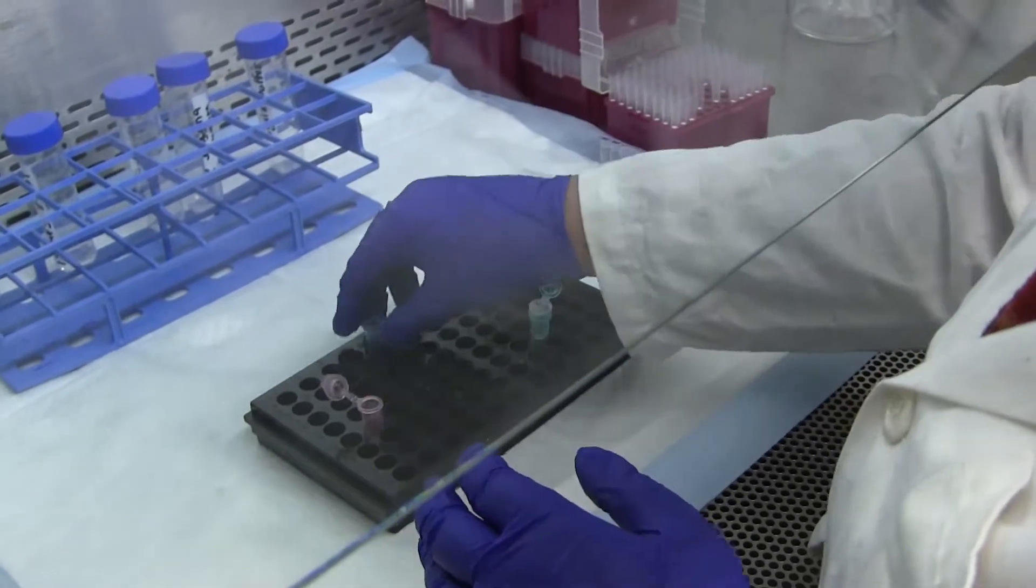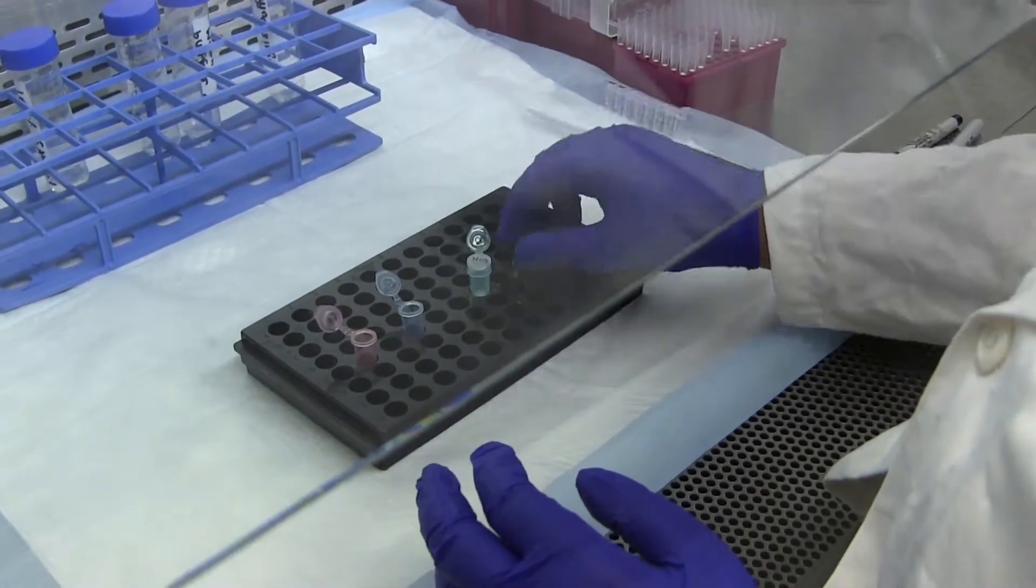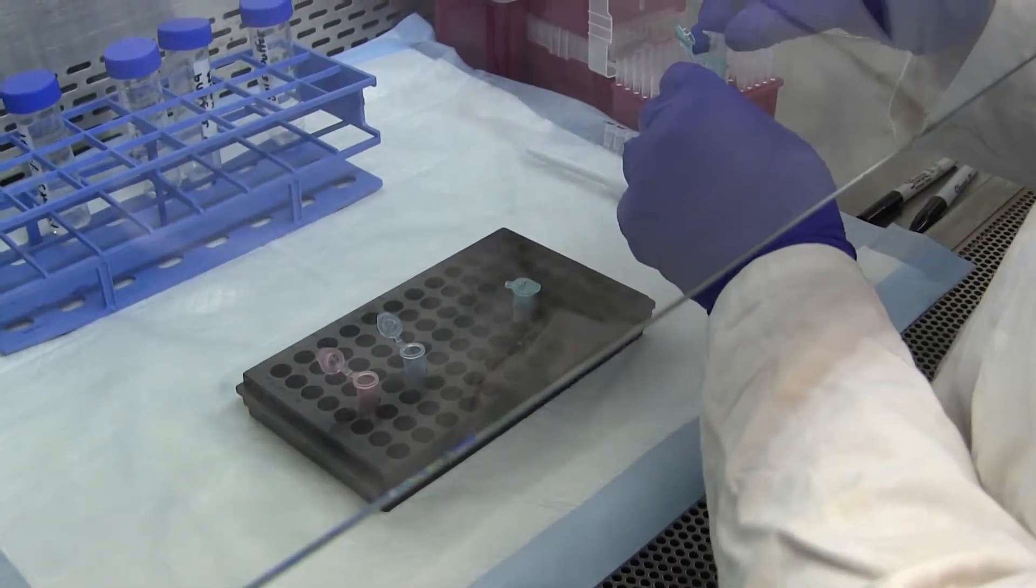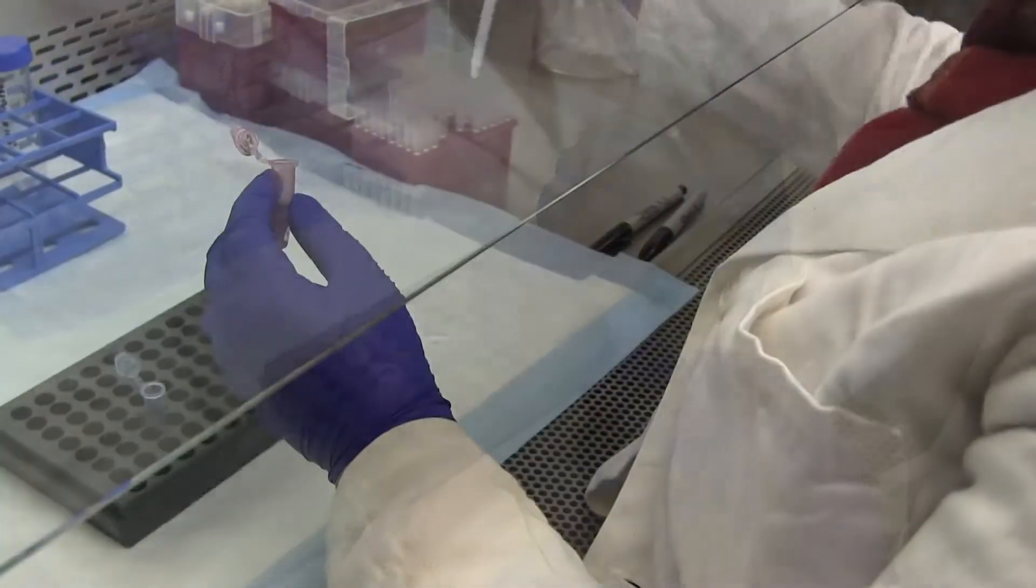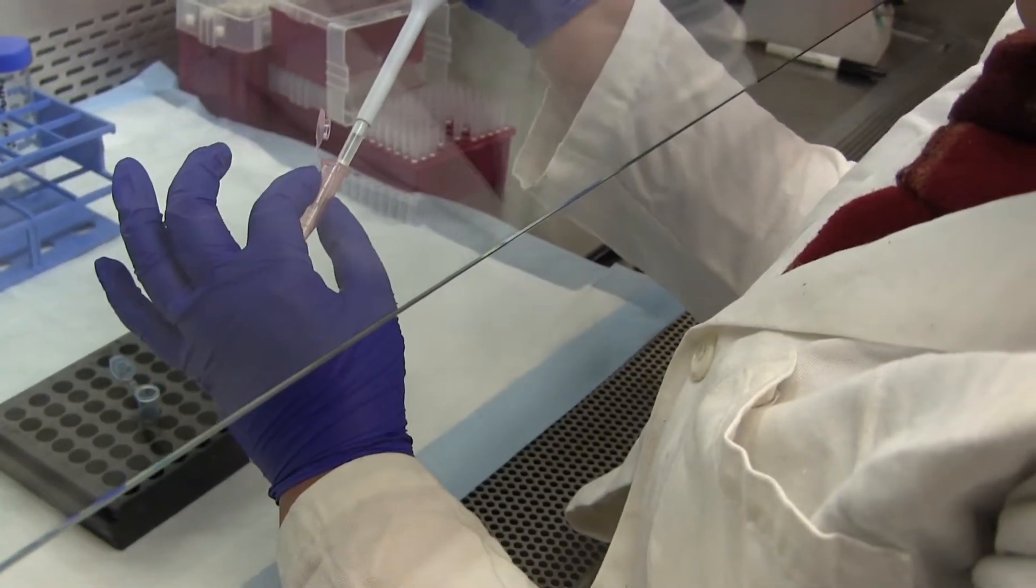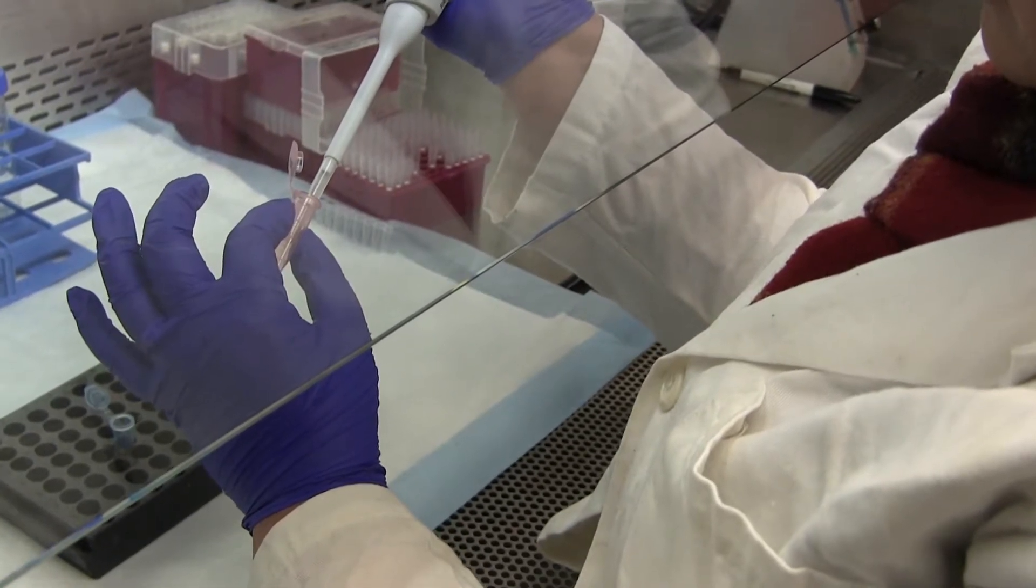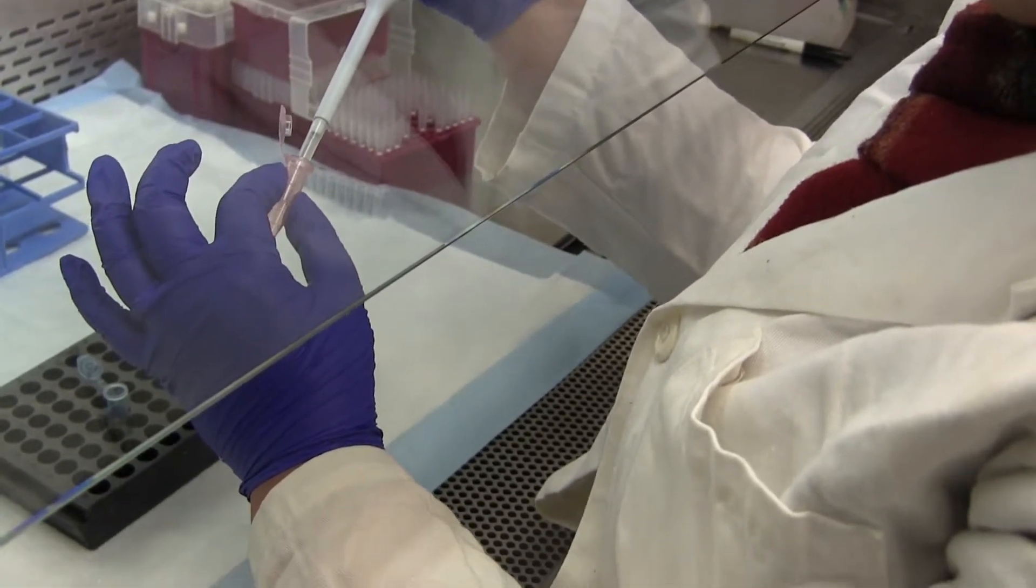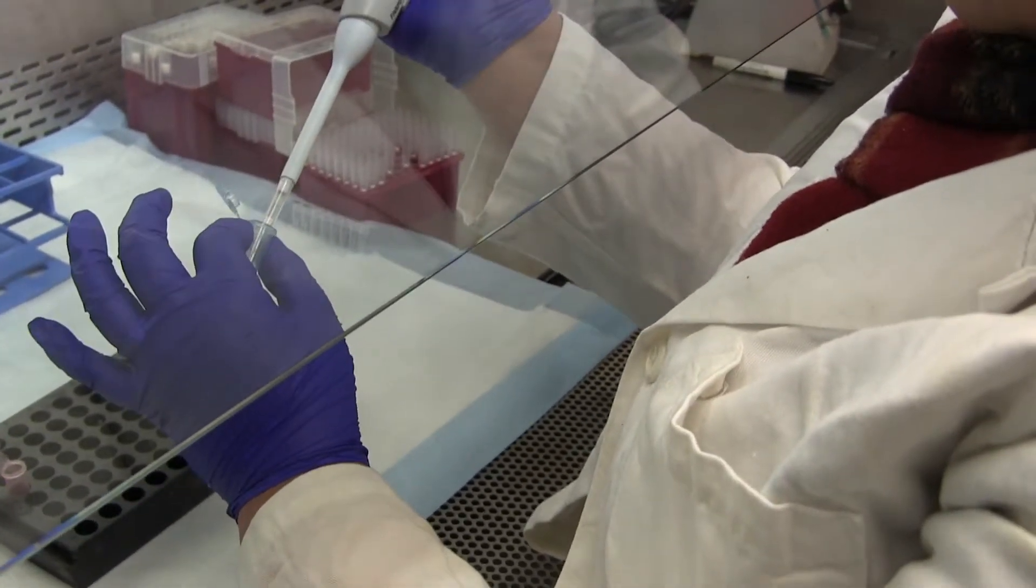So now you can discard the columns, and you see how these caps are all crooked from centrifugation. And now you can transfer the eluent to a fresh tube that's been pre-labeled. And then you are done.